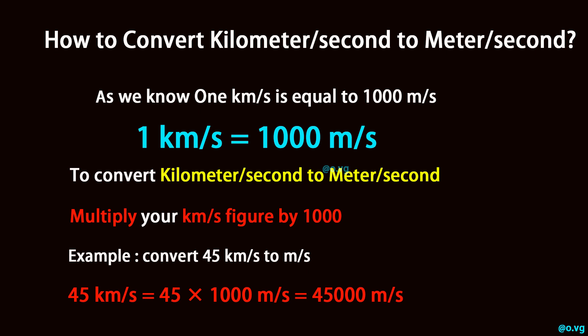Example: convert 45 kilometer per second to meter per second. 45 kilometer per second is equal to 45 times 1,000 meter per second, which equals 45,000 meter per second.